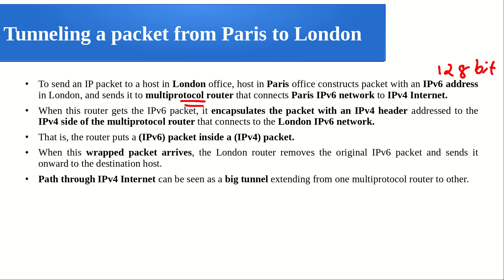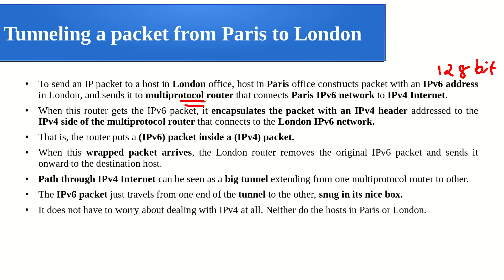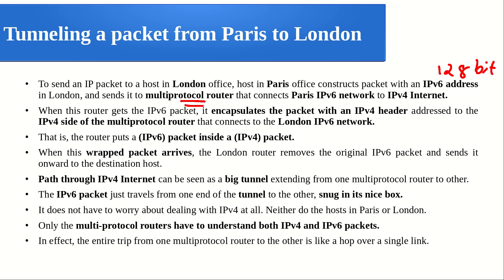The path through the IPv4 internet can be seen as a big tunnel extending from one multi-protocol router to the other. The IPv6 packet travels from one end of the tunnel to the other just like a snack in its nice box — that box is the IPv4 wrapping. The IPv6 packet does not have to worry about dealing with IPv4 at all, and neither do the hosts in Paris or London. Only the multi-protocol routers need to understand both IPv4 and IPv6. In effect, the trip from one multi-protocol router to the other is like a single hop.